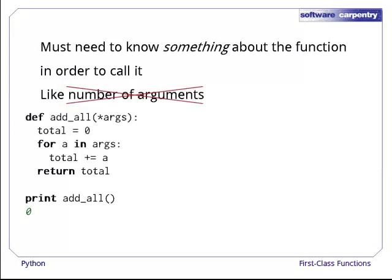If we call addAll with no arguments, the tuple that's assigned to args has no elements, so addAll returns zero. If we call addAll with the integers one, two, and three, though, args has three elements, which addAll sums up to get six.